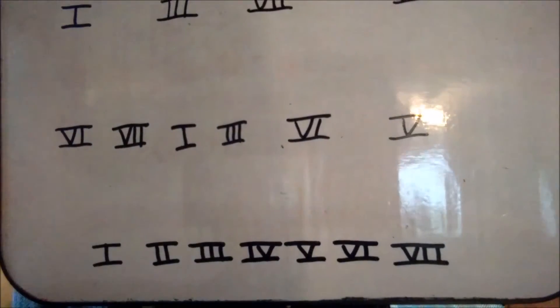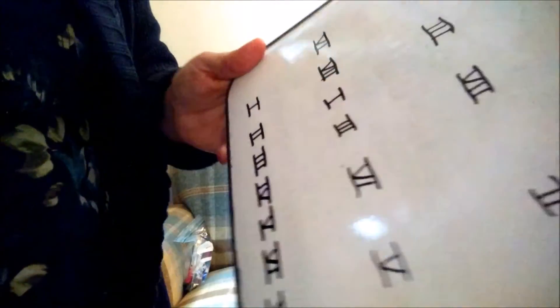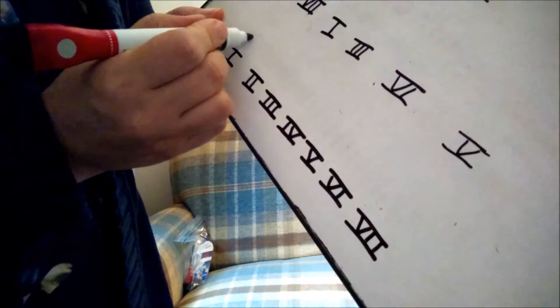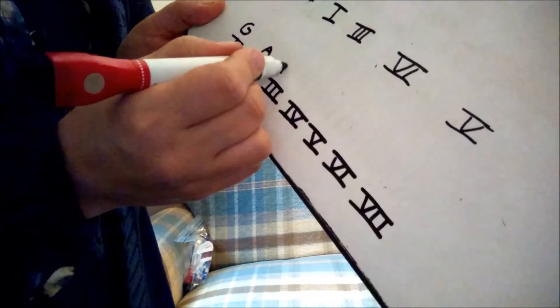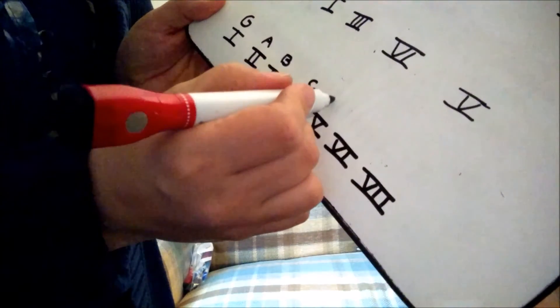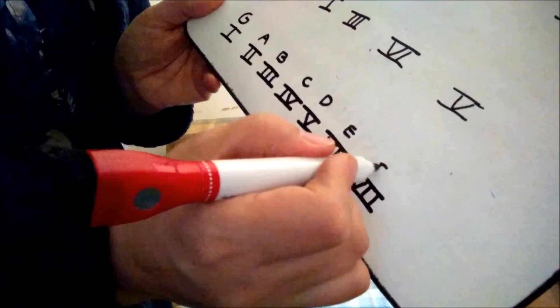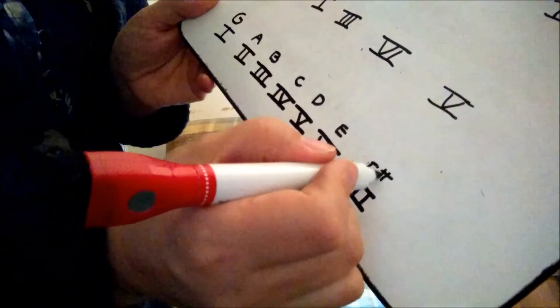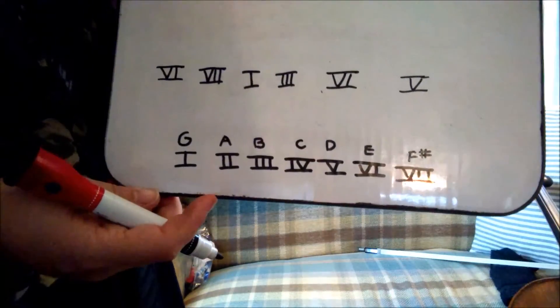So for example, we're going to plug in G major. So G major, the G major scale, right, is G, A, B, C, D, E, F sharp, right, because G major has one sharp, and that's F sharp, and then G again, of course. So let's plug this in.